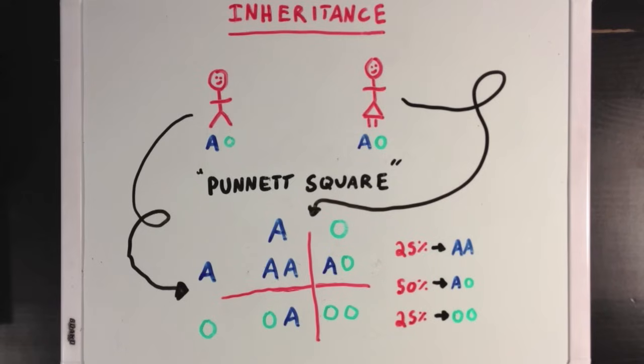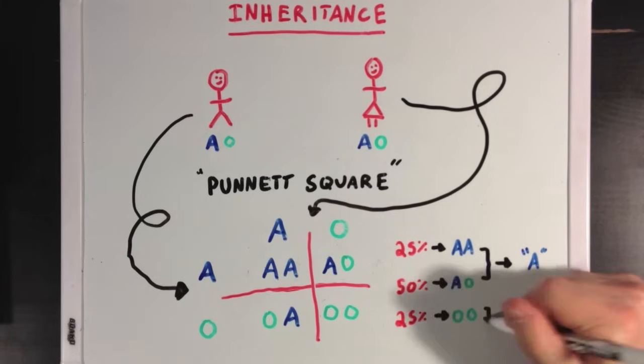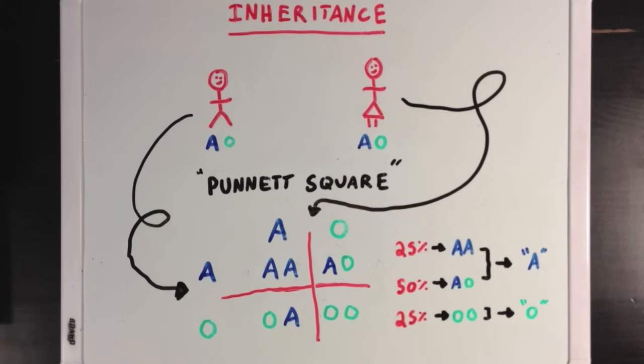So this means that 75% of the children will have blood type A in their phenotype, since AA and AO make blood type A, but 25% of the children will have the blood type O phenotype, since OO makes blood type O.